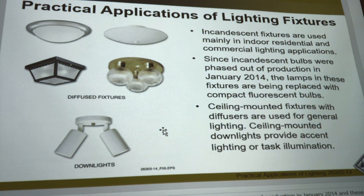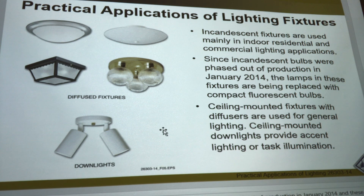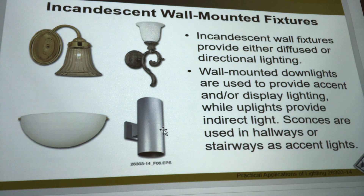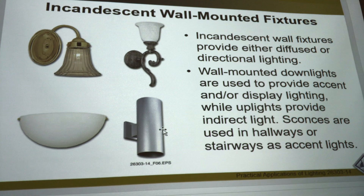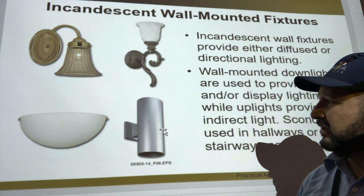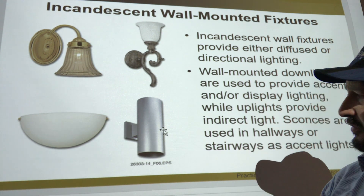Incandescent lighting was phased out in January 2014 — you can't find those at Home Depot anymore. There are just so many different types of lights that we don't concern ourselves with too much, but lighting engineers do, because they want to make certain areas look different.